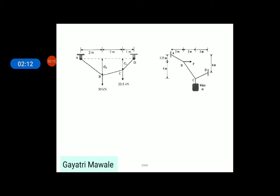So, the support reaction at A and D will be one vertical, one horizontal like in case of pin or hinge joint.